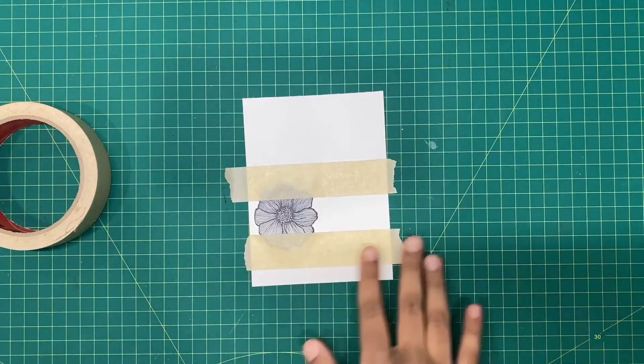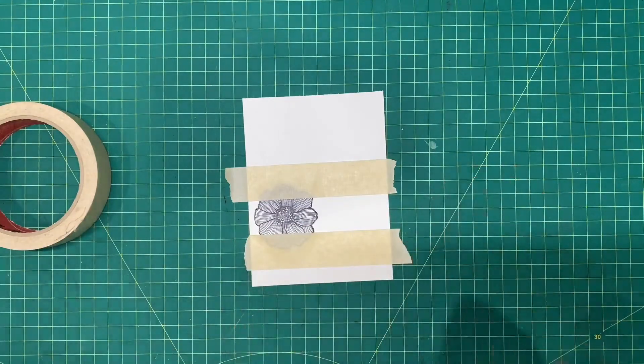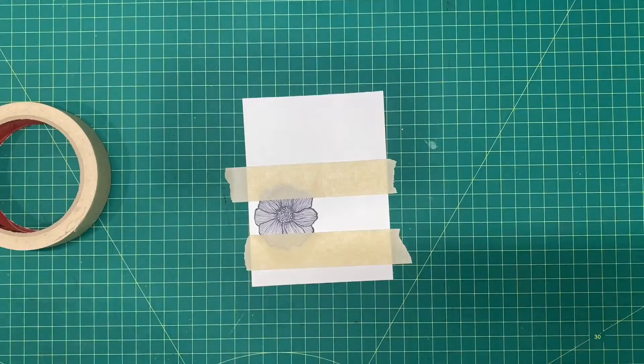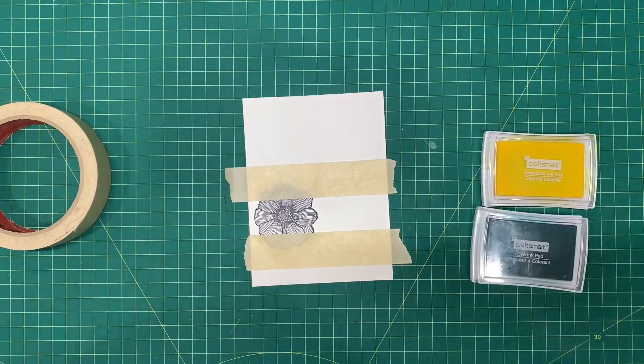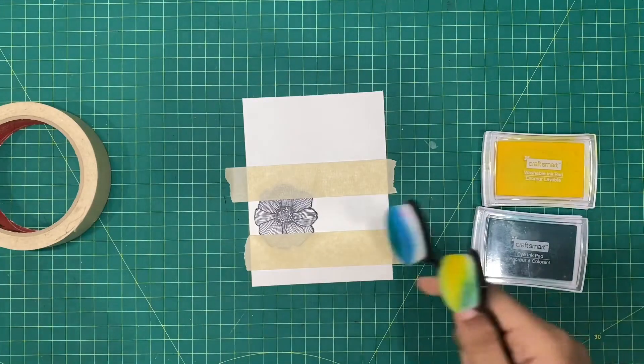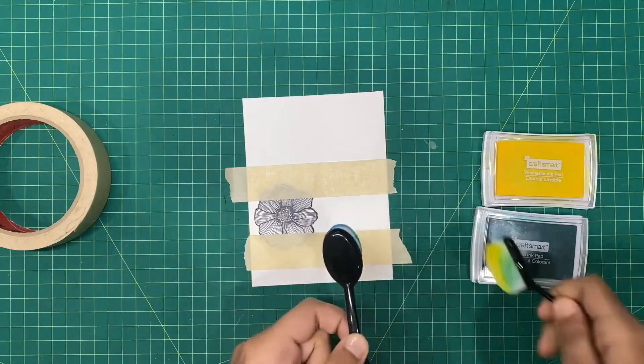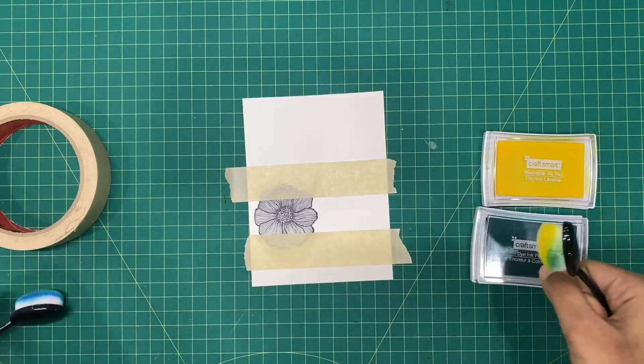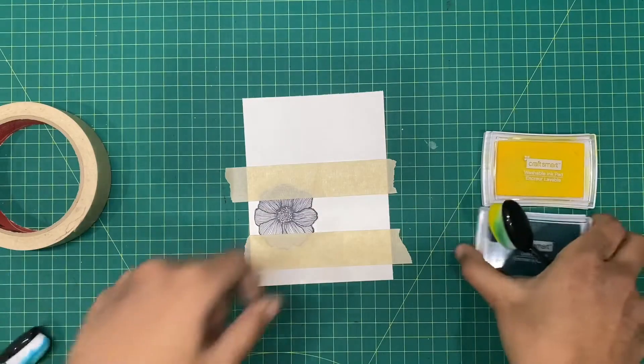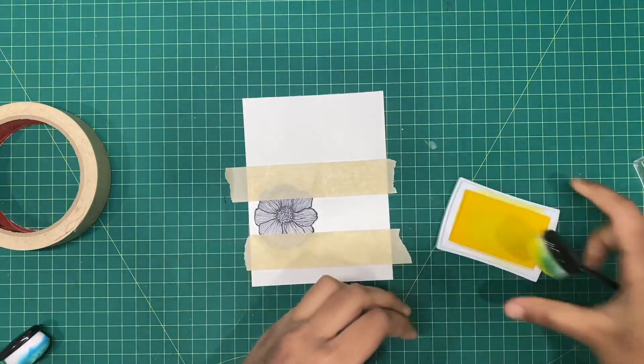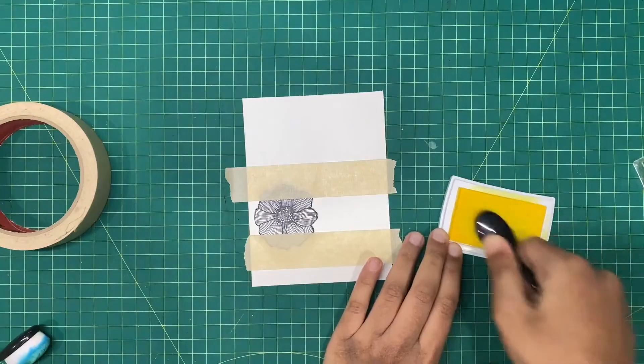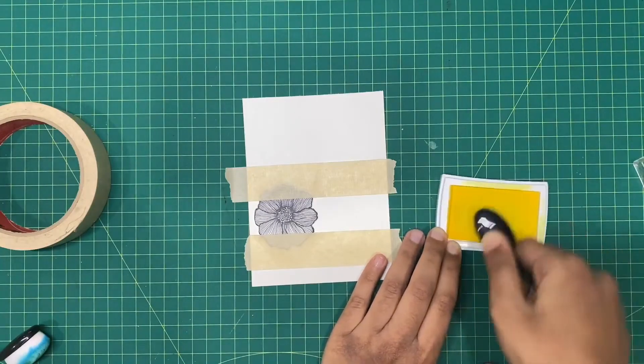You need two dye ink pads so it has to be different colors. I'm taking yellow and green and I'm taking two soft brushes for each color. First I'm going to start off with yellow. I'm going to take this ink pad and fill my brush with the yellow ink.